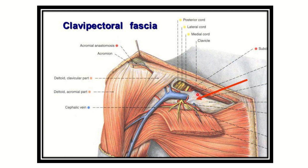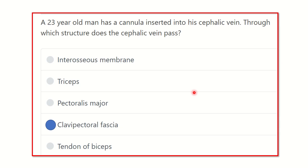Other options: here we can see the deltoid muscle — the deltoid muscle is not pierced by the cephalic vein. The cephalic vein does not pass through any muscle; it usually passes between or at the junction of two muscles, and finally pierces the clavipectoral fascia to drain into the axillary vein.